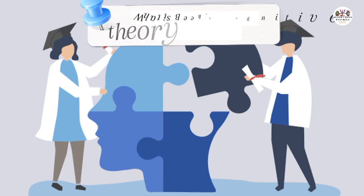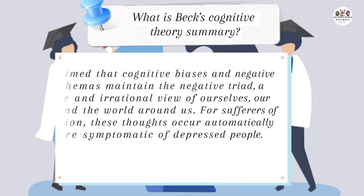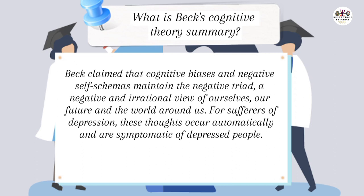اور آخری content ہے Beck's cognitive theory کا summary۔ Beck نے جو cognitive theory کے بارے میں explain کیا تھا اس کا summary یہ تھا: Beck claimed that cognitive biases and negative self-schemas maintain the negative triad — a negative and irrational view of ourselves, of our future, and the world around us. For sufferers of depression, these thoughts occur automatically and are symptomatic of depressed people.